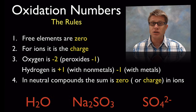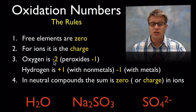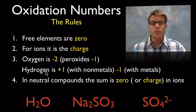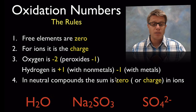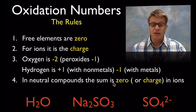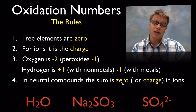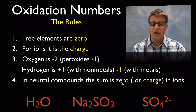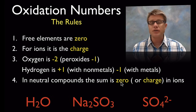These next rules deal with oxygen and hydrogen. Oxygen is always going to be a negative 2 oxidation state, unless it's in a peroxide where it can be negative 1. Hydrogen is always plus 1 if it's bonded with a nonmetal, and minus 1 if it's bonded with a metal. Finally, in a neutral compound all oxidation numbers sum to 0, but if it's an ion they sum to the charge of the ion.